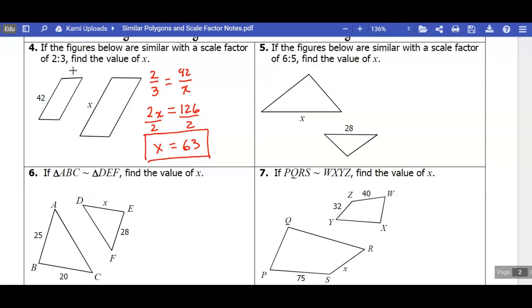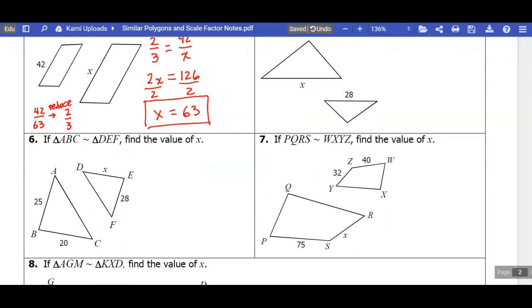So what that means is that 42 over 63, if I reduce this, we should get two-thirds. So you can always check if you want, just write your new ratio and then reduce it and see if you get your scale factor. So you'll go ahead and do number five. You can pause now or go back to that after the video is over.